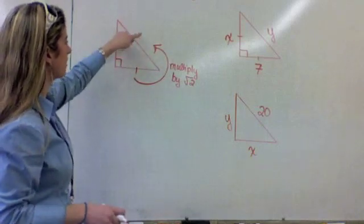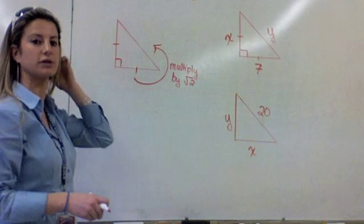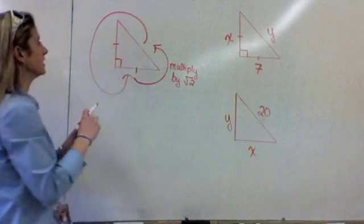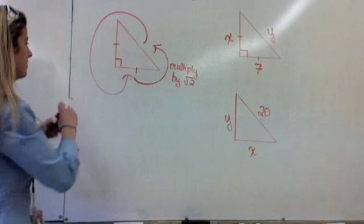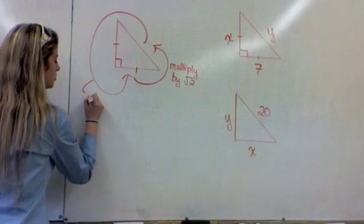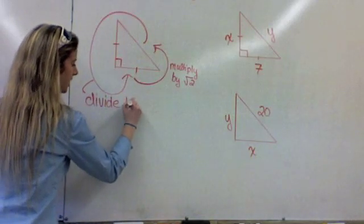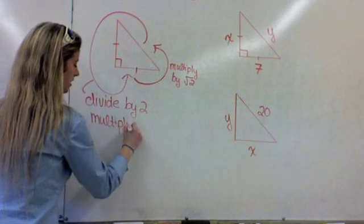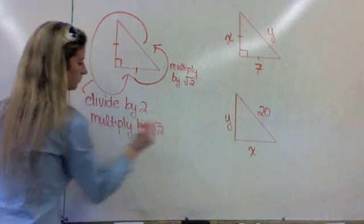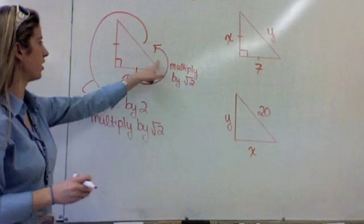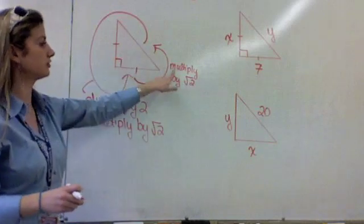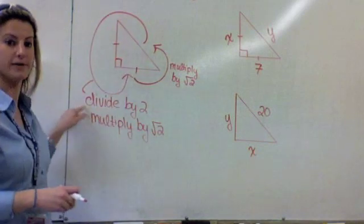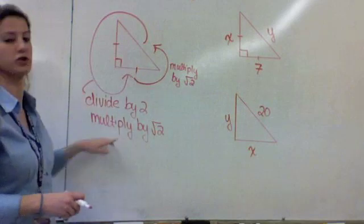Now how do you go from hypotenuse to leg? This was the one that was a little more difficult. I'm going to make a nice big arrow here coming from hypotenuse to the leg. Clearly, it doesn't matter which leg we go to because the legs are the same. To do this, you are going to divide by 2 and then multiply by root 2. So to go from hypotenuse down to the leg, you divide the hypotenuse by 2 and then multiply by root 2.